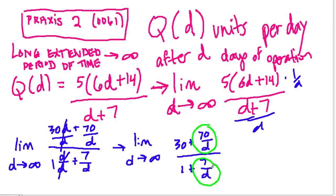And essentially, this will just be equal to the limit as D approaches infinity of 30 over 1, or 30 units. So over time, this machine will be able to produce per day 30 units. Hope that helped. Thank you.